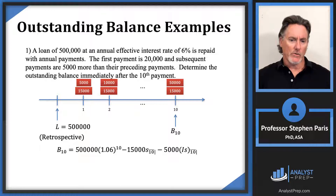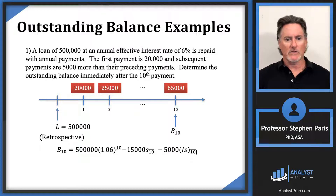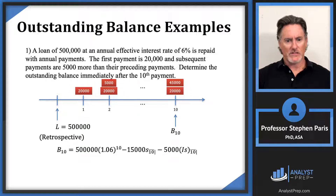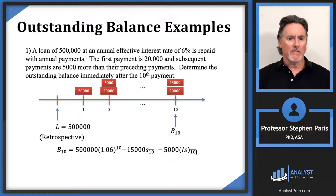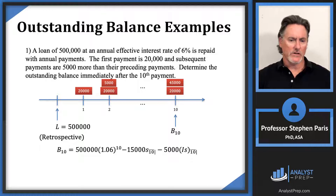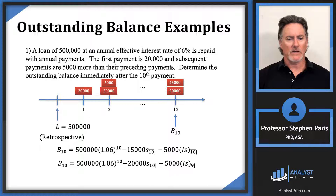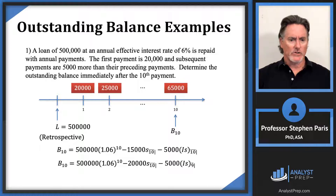Another natural way is to think of the payments as 10 level payments of $20,000 plus an increasing part starting at time 2: an extra $5,000 at time 2, an extra $10,000 at time 3, and so forth. Done this way, the accumulated value would be $20,000 times s-angle-10 plus $5,000 times (Iä)s-angle-9.